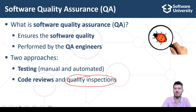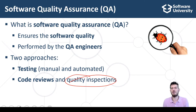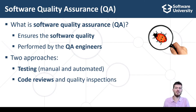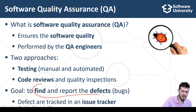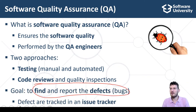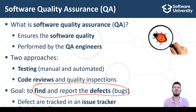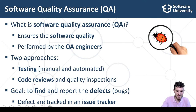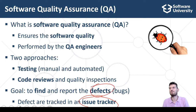Quality inspections try to find problems in the code by understanding the program logic and internal design. The goal of the testing process is to find and report bugs, defects and issues with the software. Reported bugs are described, submitted and tracked in an issue tracking software, or simply a bug tracker.